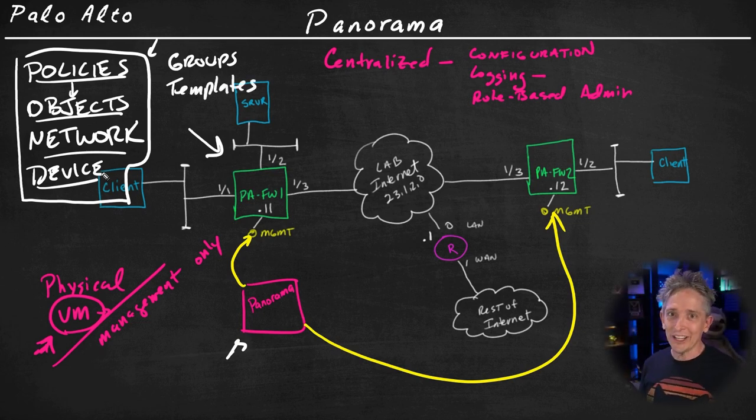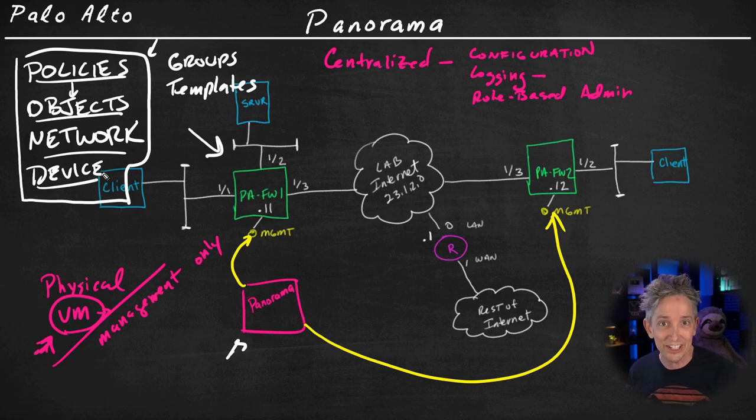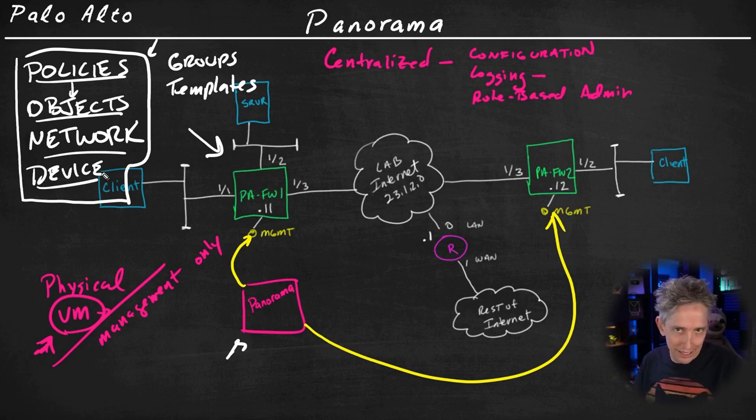And the primary way on Panorama that we're going to implement these is through the use of groups and templates. And in this set of videos, I'll walk you through step by step getting to that point, so we can push out policy and configurations from Panorama out to the firewalls. Now, one of the tricks is, if we don't have Panorama up and running, it's not going to be managing anything.